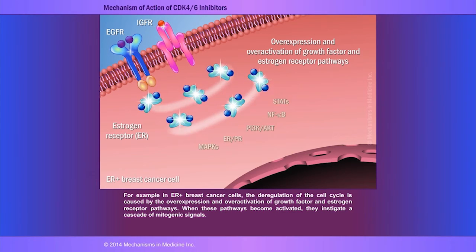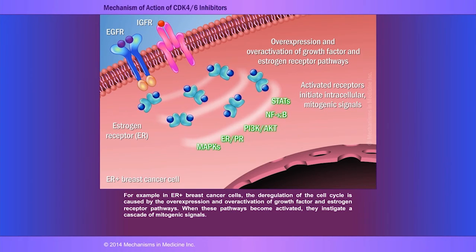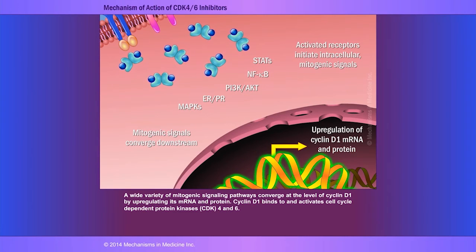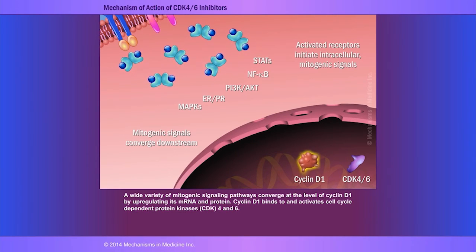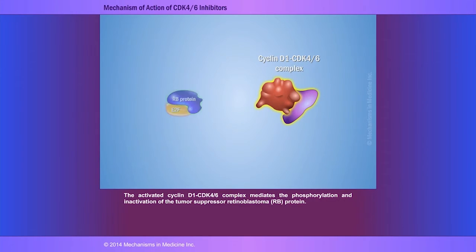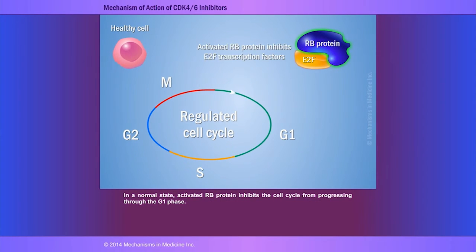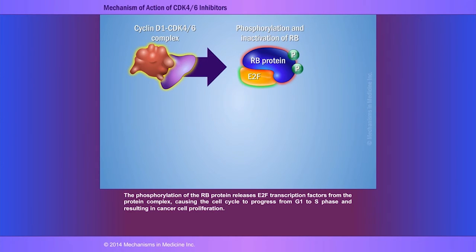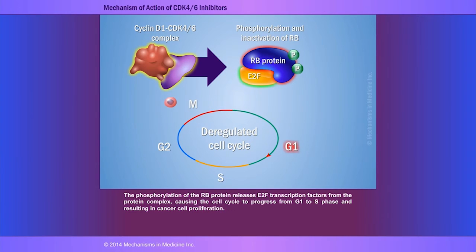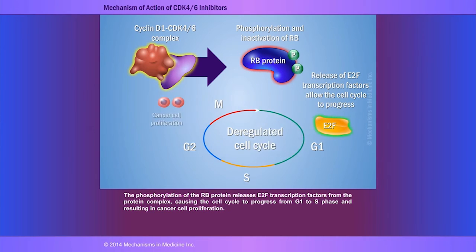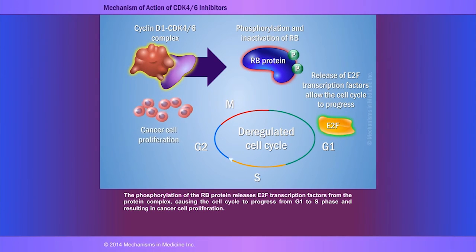When these pathways become activated, they instigate a cascade of mitogenic signals. A wide variety of mitogenic signaling pathways converge at the level of cyclin-D1 messenger RNA and protein upregulation. Cyclin-D1 binds to and activates CDK4 and 6. The activated cyclin-D1-CDK4-6 complex mediates the phosphorylation and inactivation of the tumor suppressor retinoblastoma protein. Phosphorylation of RB releases E2F transcription factors from the protein complex, causing the cell cycle to progress from G1 to S phase, resulting in cancer cell proliferation.